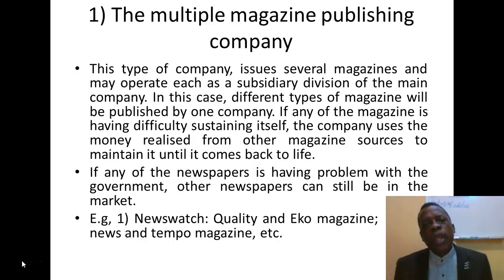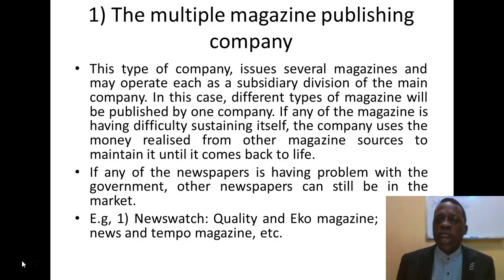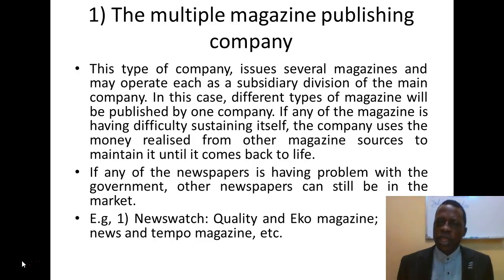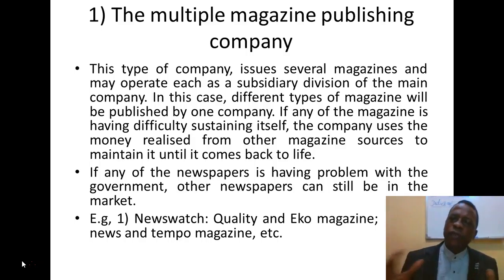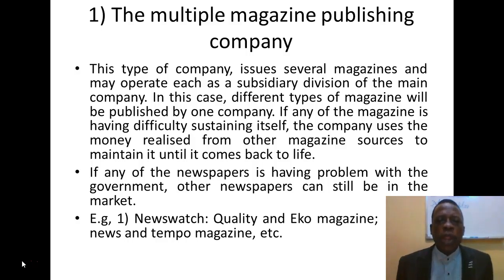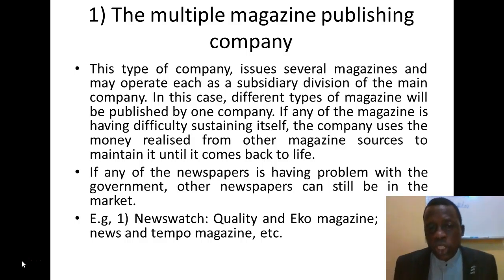In the multiple magazine publishing company, this type of company issues several magazines and may operate each as a subsidiary division of the main company, publishing different types of magazines. If any magazine is having difficulty sustaining itself, the company uses money realized from other magazine sources to maintain it until it recovers. Examples include Newswatch, Quality, Eco, The News, and Tempo magazines.